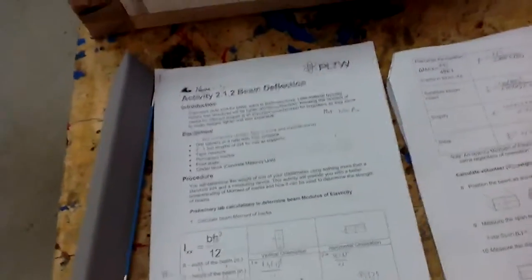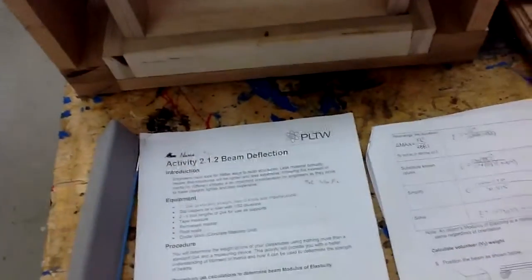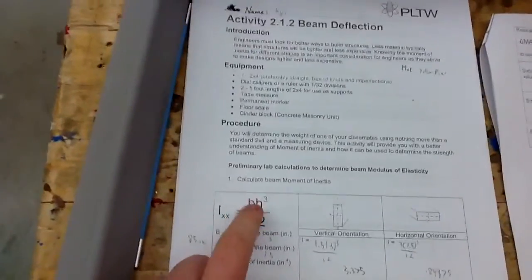is, which is the beam's likeliness to shift, and that's the base times the height cubed over 12.